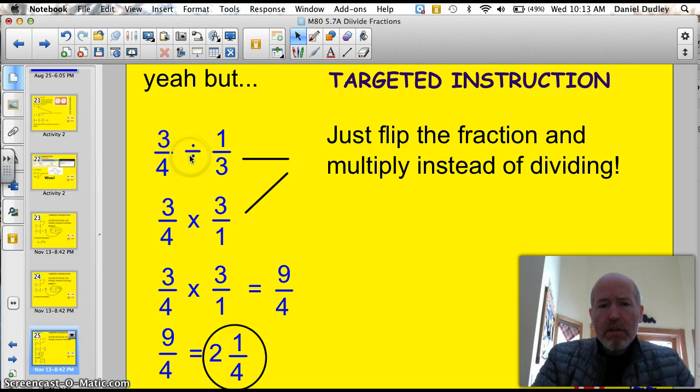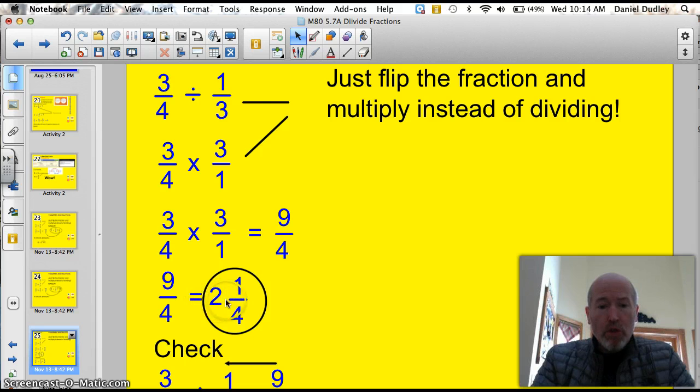3 fourths divided by 1 third. Just flip the fraction. 3 fourths times 3 over 1. One more time. I just flipped the second fraction. 3 fourths divided by 1 third. 3 fourths times. Just flip it. To 3 over 1. So, 3 times 3 is 9. 4 times 1 is 4. So, I get 9 fourths. If we break that down into a mixed number, it's 2 and 1 fourth.